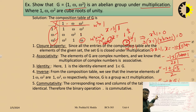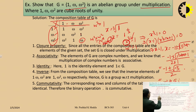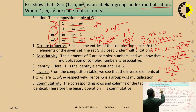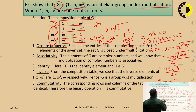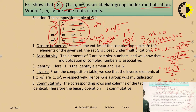Now we check all four properties required for a group. Closure property: since all the entries in the composition table are 1, ω, ω² — elements of G — all entries of the composition table are elements of G. Therefore it follows the closure property.